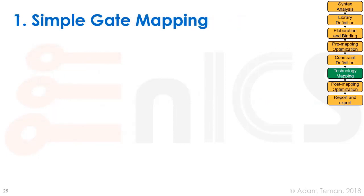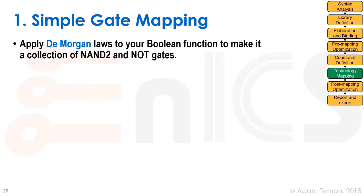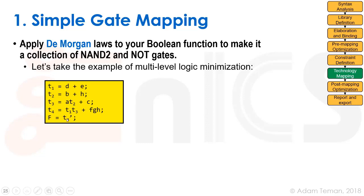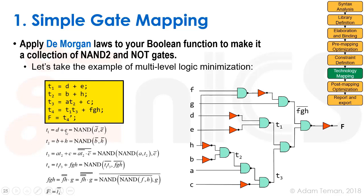In the first step — simple gate matching — we take our entire Boolean function or combinatorial network and apply DeMorgan's theorem to turn it into two-input NAND and NOT gates. We start with the function from our multi-level optimization and convert each sub-function into NAND and NOT gates. The entire representation now consists only of NAND and NOT gates.